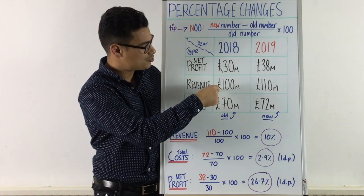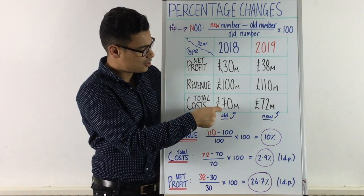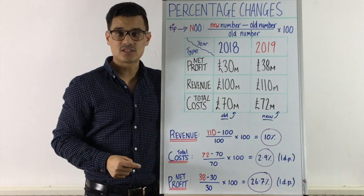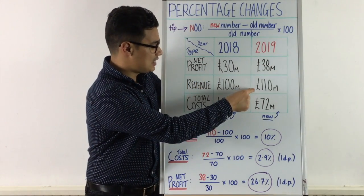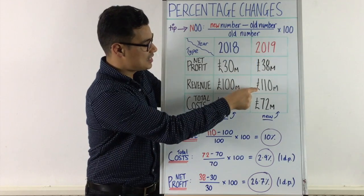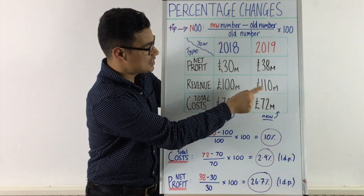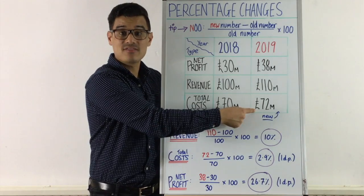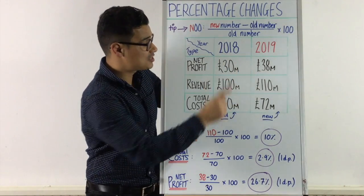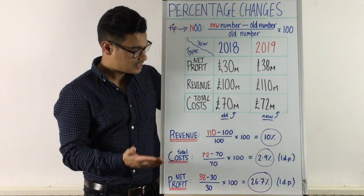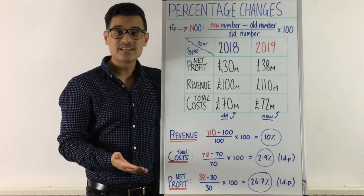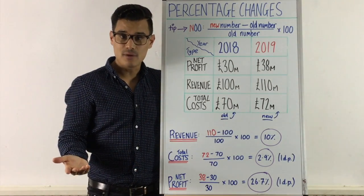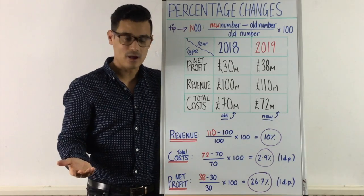So revenue: if revenue is 100 million and total costs are 70 million, then net profit is 30 million. And on the other side, if revenue in 2019 is 110 million and total costs are 72 million, then net profit is going to be 38 million. So how do we do percentage changes for each of these three? Maybe that's three marks you'll be getting now.